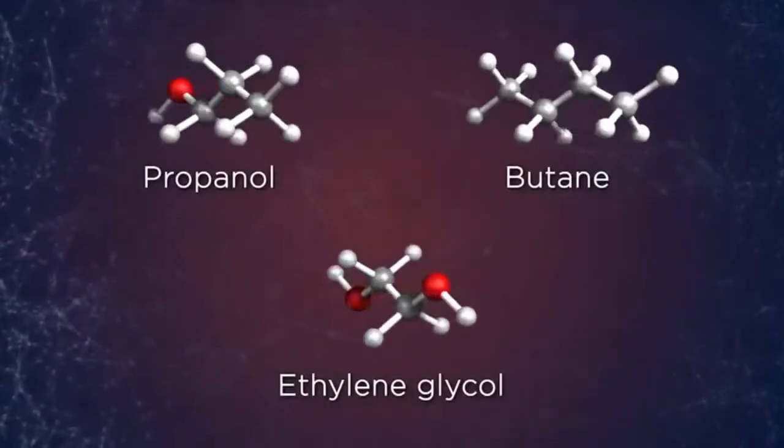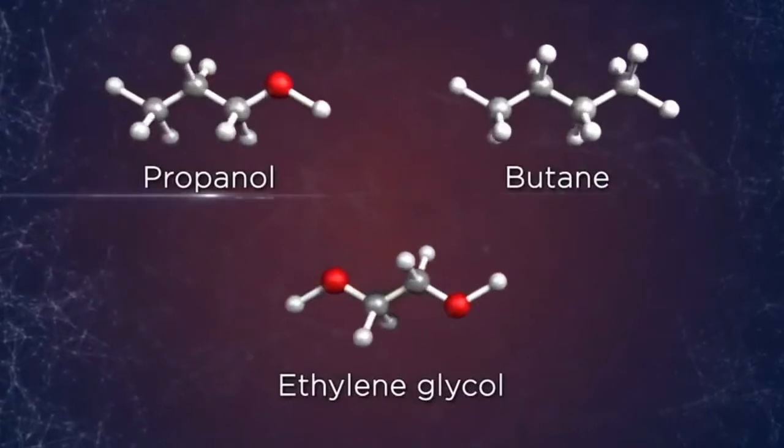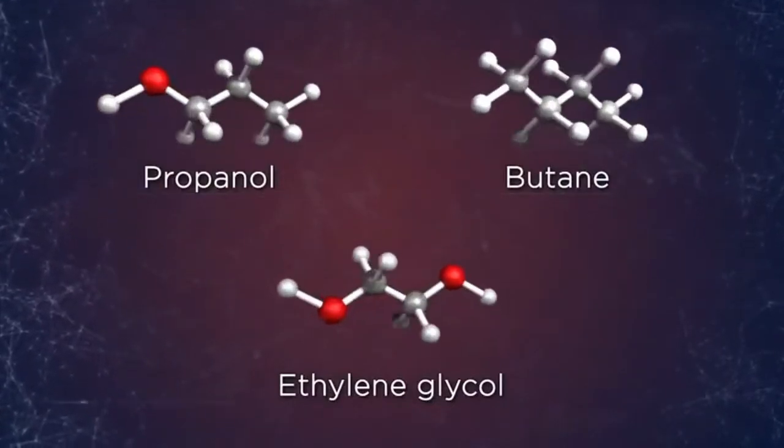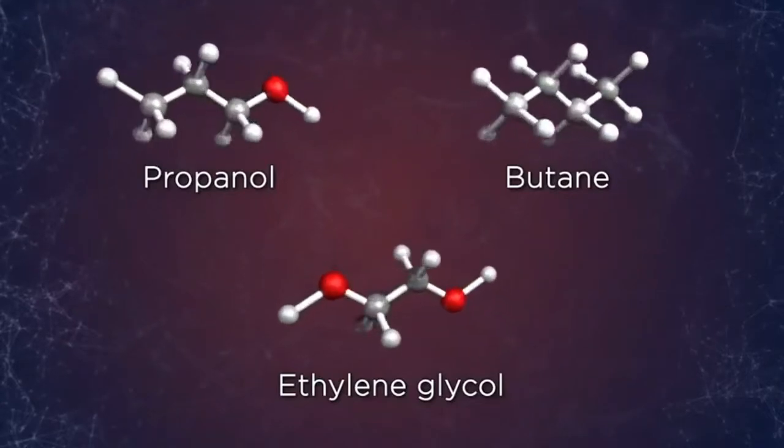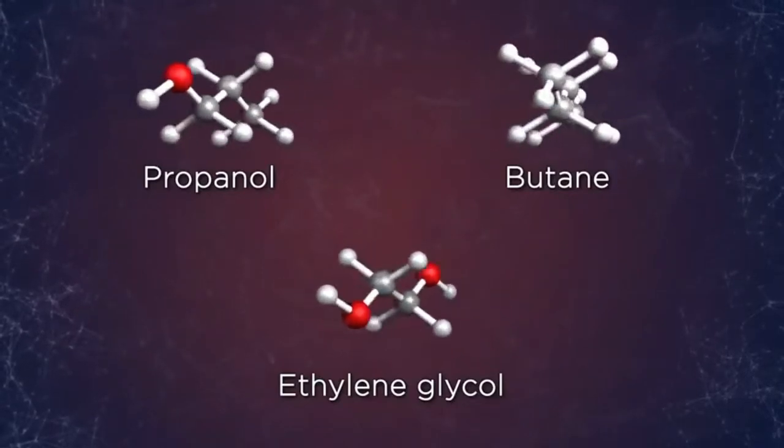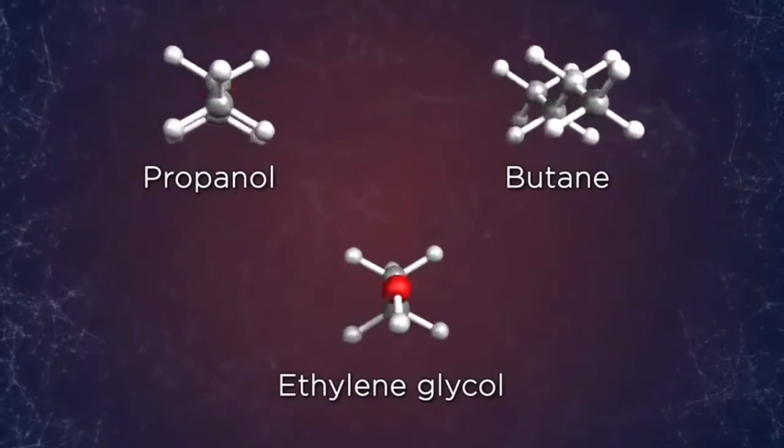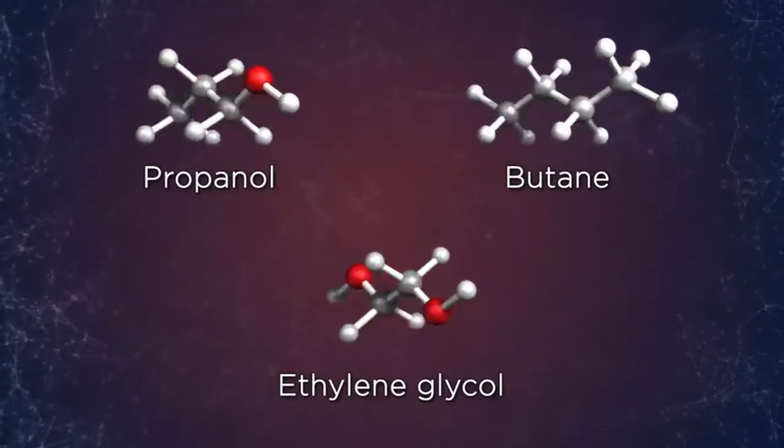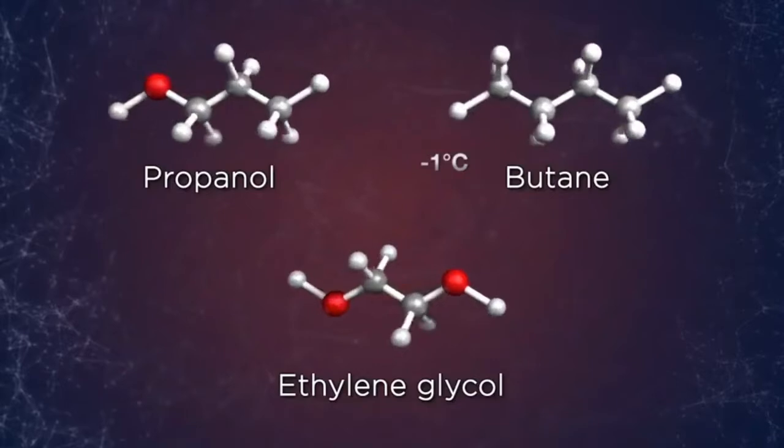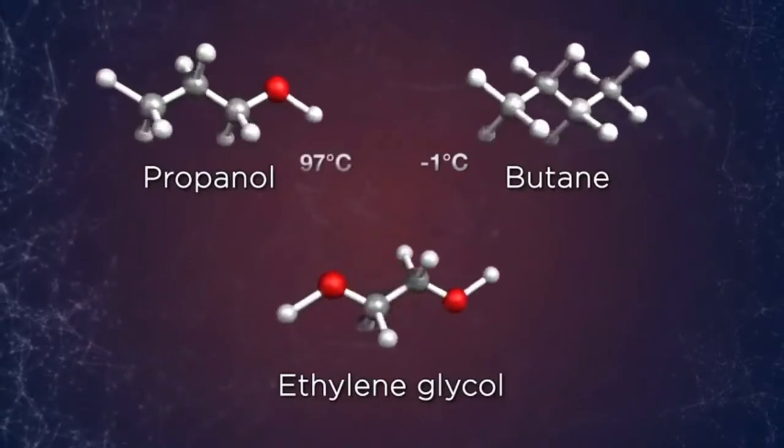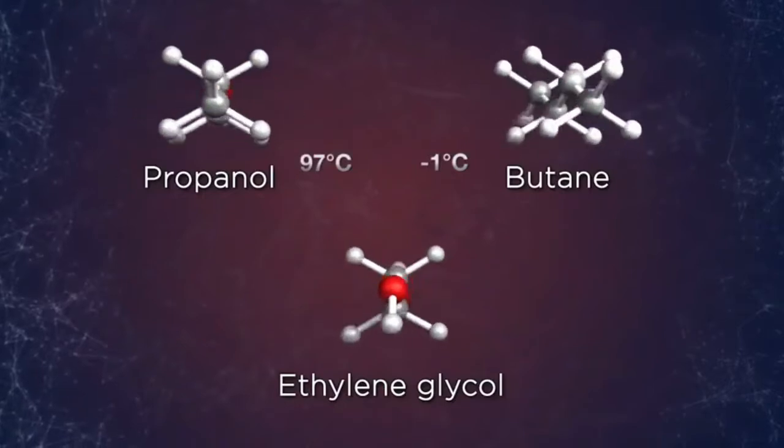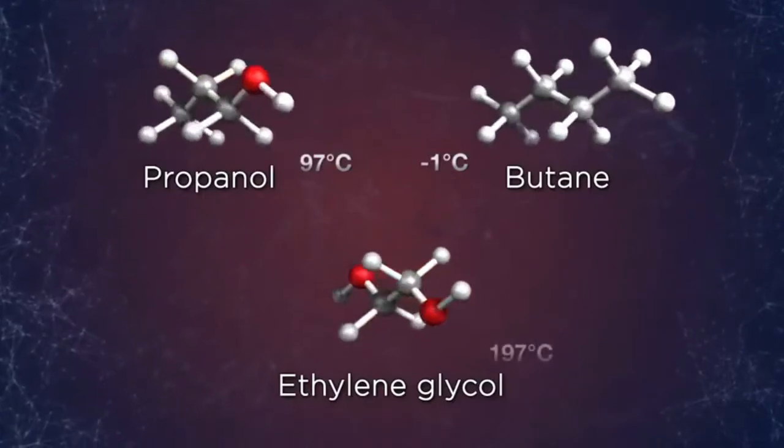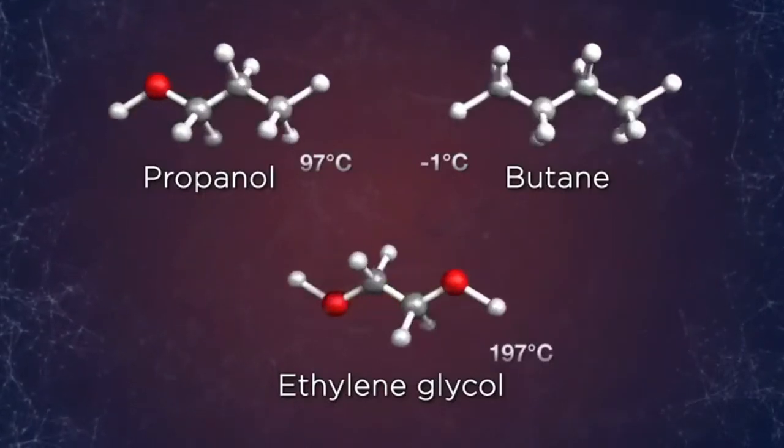Compare these structures of butane, propanol, and a di-alcohol sometimes called glycol. This is Wurtz's creation called ethylene glycol. All four molecules have nearly the same size and shape, yet the boiling point of butane is minus one degree centigrade. Propanol jumps to an impressive 97 degrees centigrade, and ethylene glycol, which is a hydrogen bonding machine, boils at a very high 197 degrees centigrade.